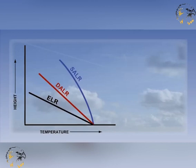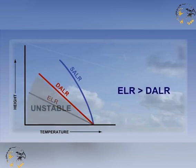If the ELR is greater than the DALR, then the atmosphere is defined as being absolutely unstable. This situation is not common within the atmosphere and only happens just above the surface on sunny days.